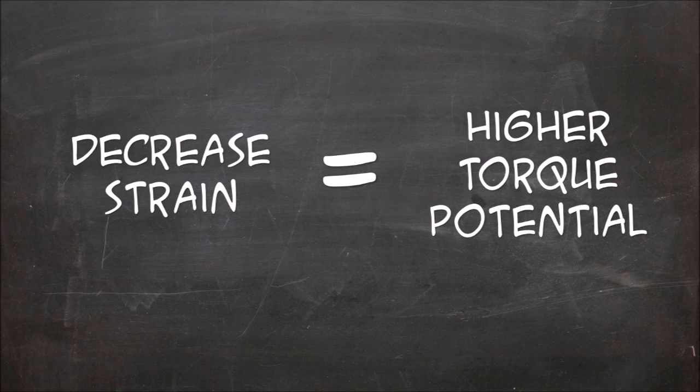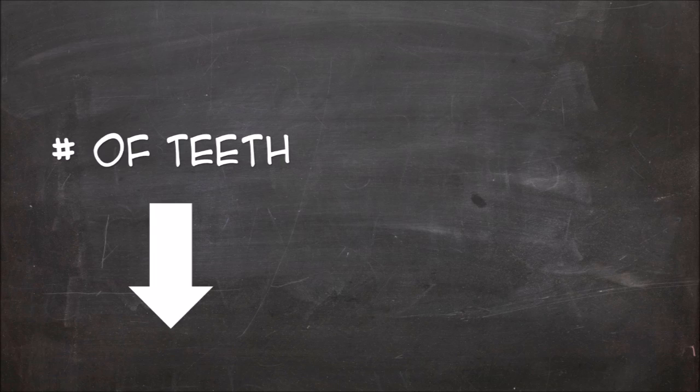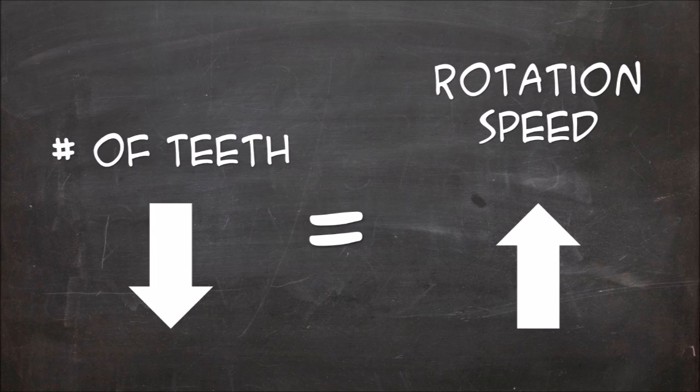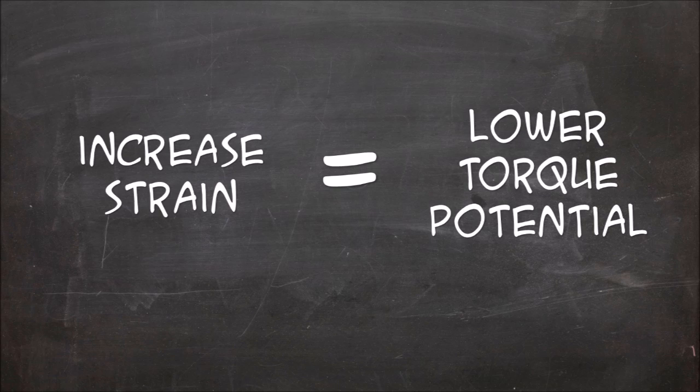In contrast, as you decrease the number of teeth, you increase the rotation speed of the set as a whole, but this increases strain on the gear set, so you lose torque potential.